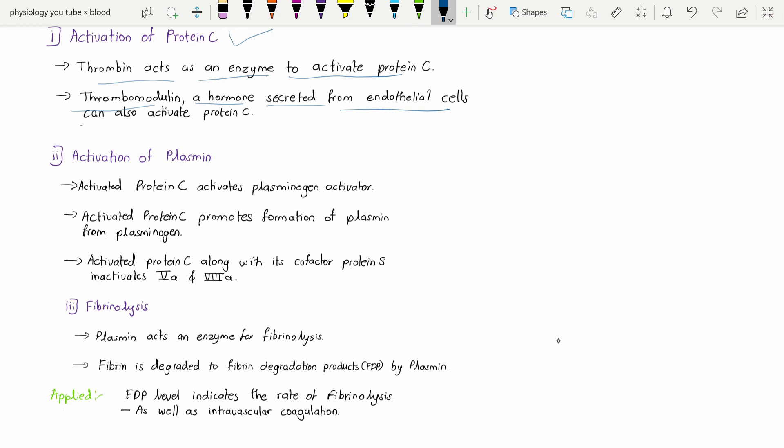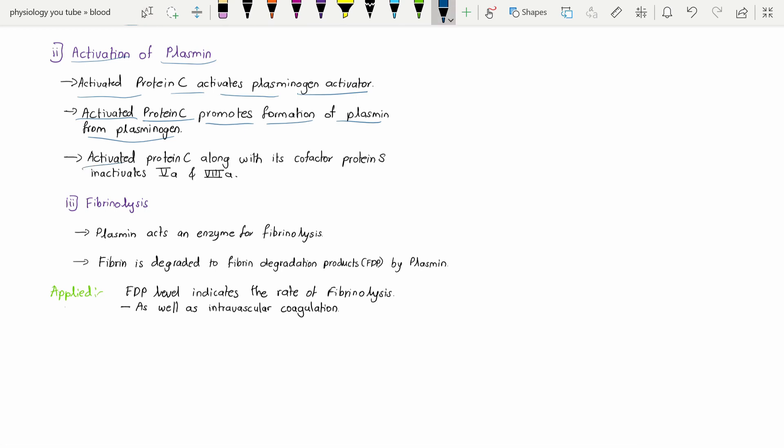Next, the activation of the plasmin. Activated protein C activates the plasminogen activator. It is not actually activating the plasminogen activator directly; it is mainly removing the inhibition capacity from the plasminogen activation inhibitors, in turn helping the plasminogen activator. The activated protein C promotes the formation of plasmin from plasminogen, and the activated protein C along with the cofactor protein S inactivates the factor 5 and the factor 8.